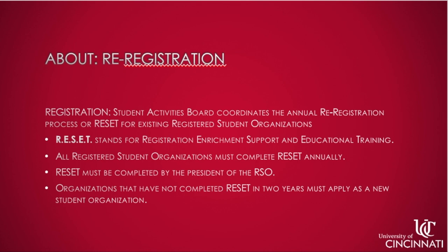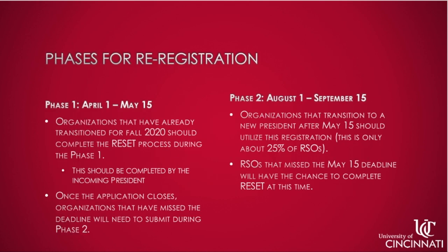RESET must be completed by the president of the RSO. Of particular notice, organizations that have not completed RESET in two years must apply as a new student organization. There are two main phases for re-registration: Phase 1 is from April 1st to May 15th, and Phase 2 is from August 1st to September 15th. Your organization may choose to register during either of these periods. Note that the sooner your organization submits the re-registration application, the faster you can be approved and access exclusive privileges available to RSOs.